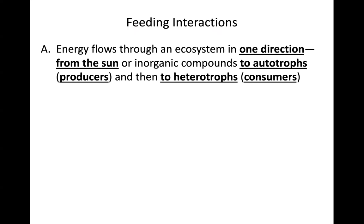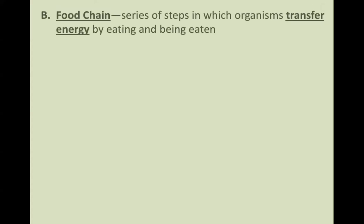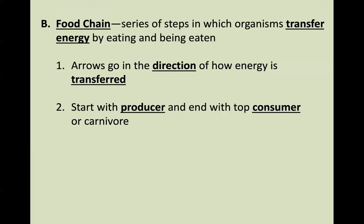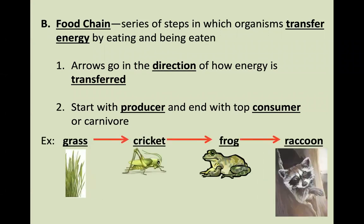Energy flows through an ecosystem in a one-way direction, with the sun being the major source of energy for life on Earth. That energy is then transferred down to producers and over to consumers — this is a one-way directional flow. When we look at our energy pyramids, we'll see there's going to be a loss of energy during this energy transfer. The food chain is defined as a series of steps in which organisms transfer energy by eating or being eaten.